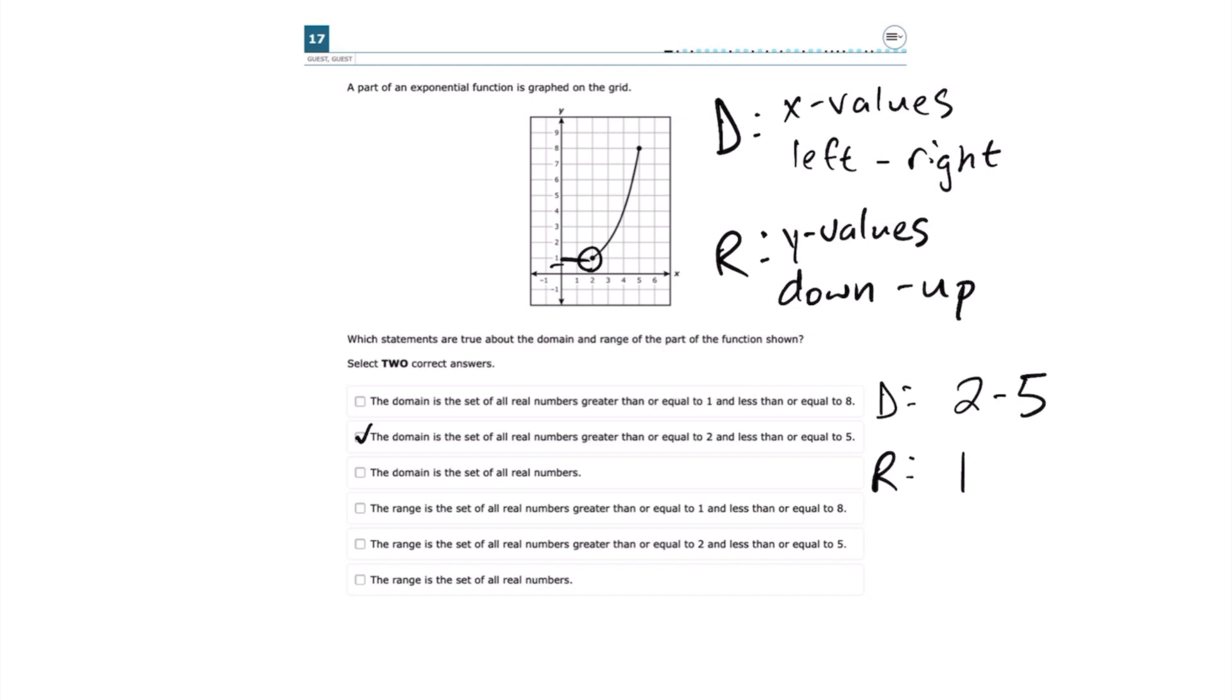Then if we go up, the highest point on the graph is right here. On the y-axis, that equals positive 8. So we know our range is between and equal to positive 1 and positive 8.